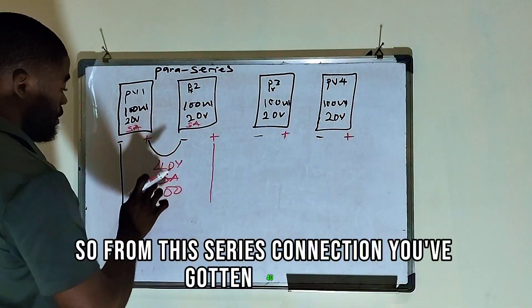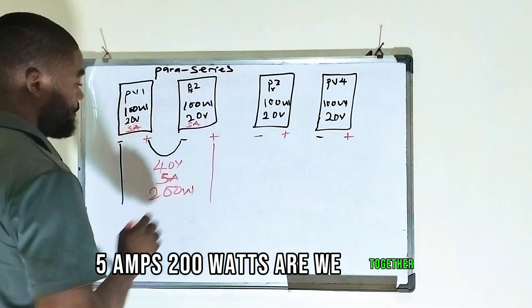So 100-watt plus 100-watt will give you 200-watt. So from this Series connection, you've gotten 40-volt, 5-amps, 200-watt. Are we together? Yes, sir.